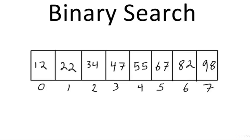With linear search on a 50,000, 100,000, or million element array, we may have to do that many comparisons before finding the value or determining it's not there. With binary search, after just the first comparison we eliminate half the search space. The idea is: we find a midpoint value, compare it to the search value, and if they don't match, we eliminate either the bottom or top half depending on whether the search value is greater or less than the midpoint.